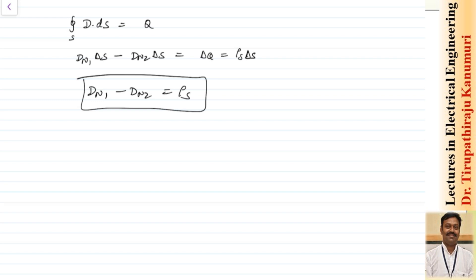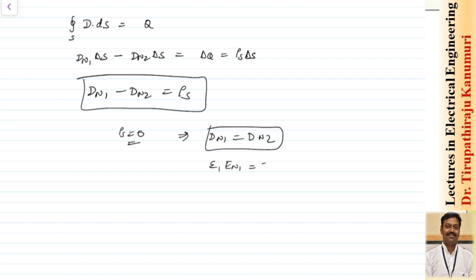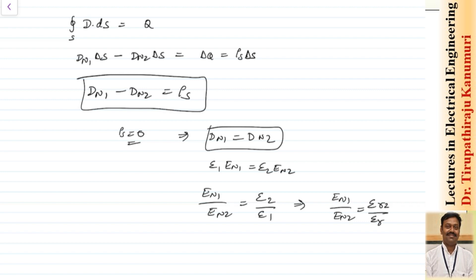For perfect dielectric material, the surface charge density rho s equals 0, so Dn1 equals Dn2. Since D equals epsilon E, we get epsilon 1 En1 equals epsilon 2 En2, or equivalently En1 divided by En2 equals epsilon 2 divided by epsilon 1, which can also be written as epsilon r2 divided by epsilon r1. This is the result for perfect dielectric material.